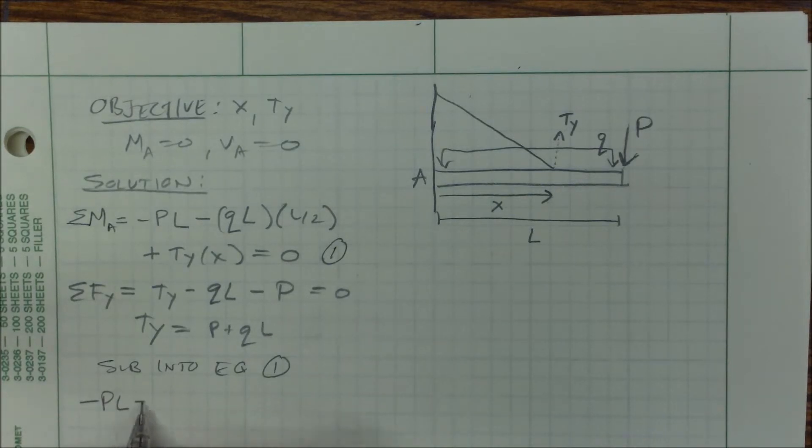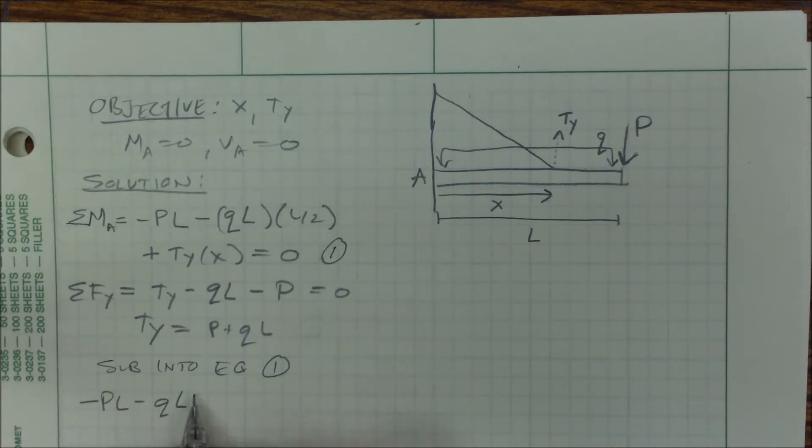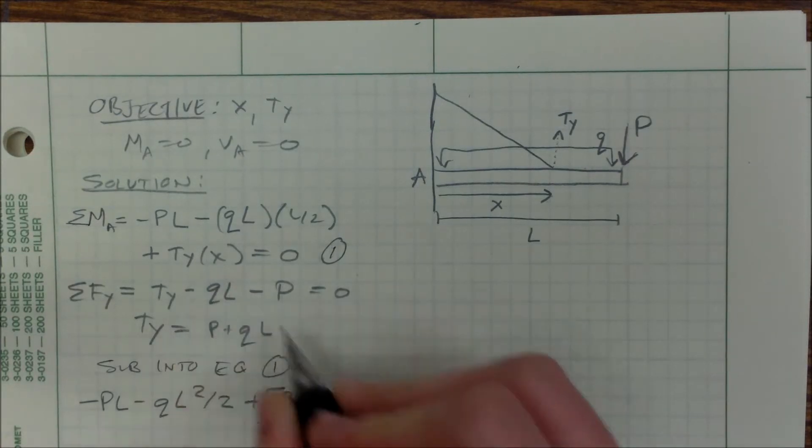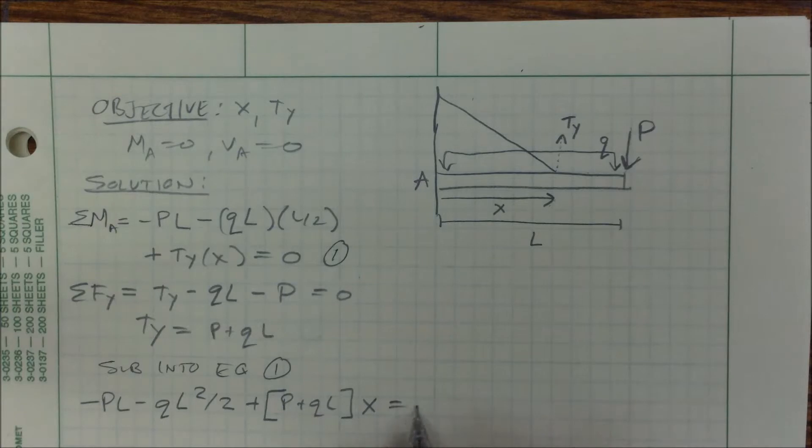Negative PL minus QL squared over 2 plus, now I'm going to plug in my P plus QL for TY, and I multiply it times X equals zero.